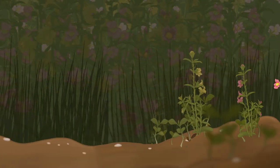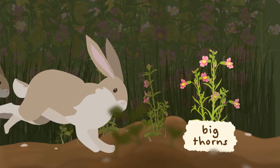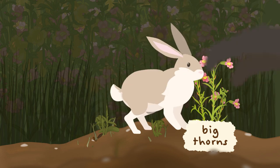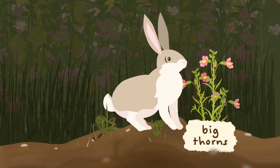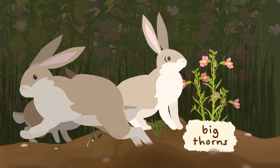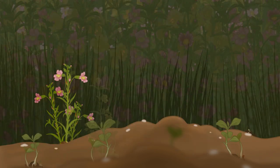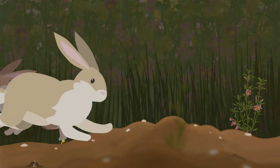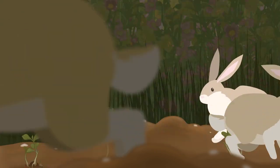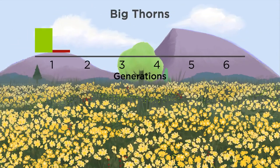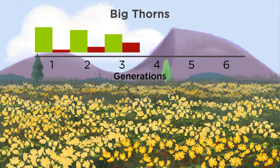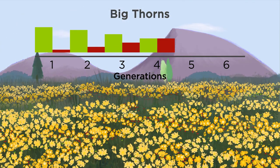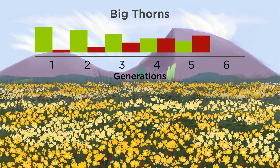The big thorns trait could work this way. Thorns don't affect reproduction directly, but the plants with this trait are less likely to be eaten. On average, they're more likely to grow up and reproduce. This gives plants with the big thorns trait a reproductive advantage — they pass their genes and this trait to more offspring. Over generations, big thorns becomes more common in the population.